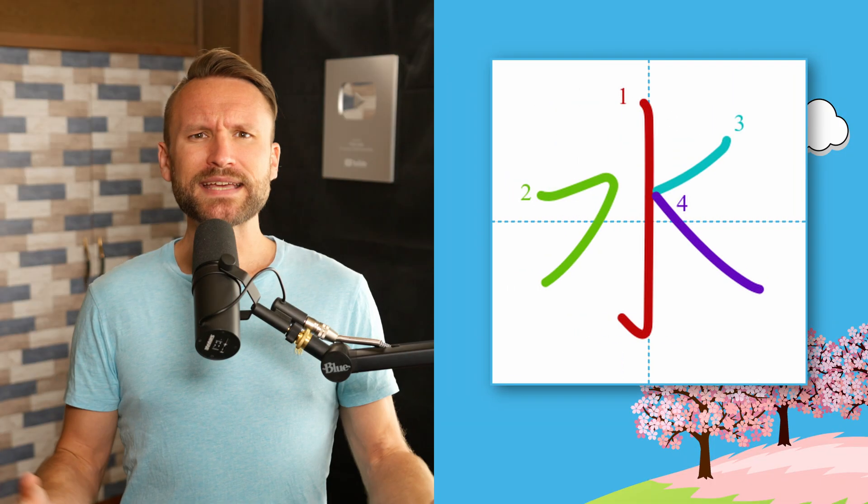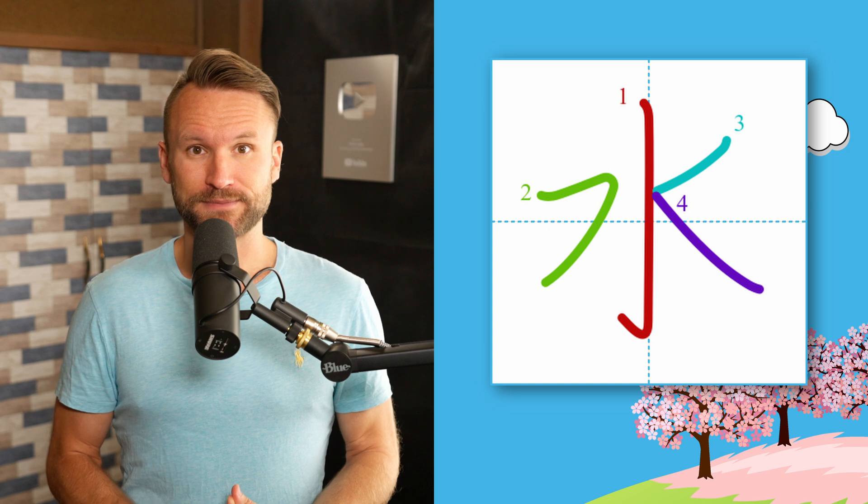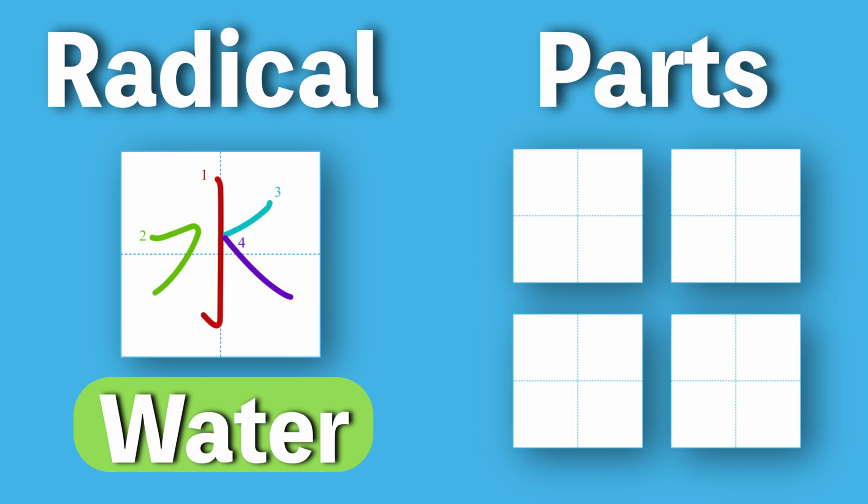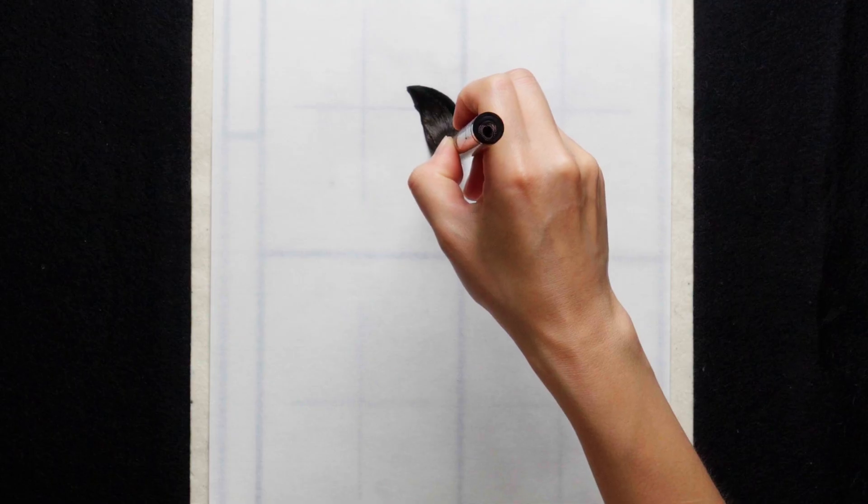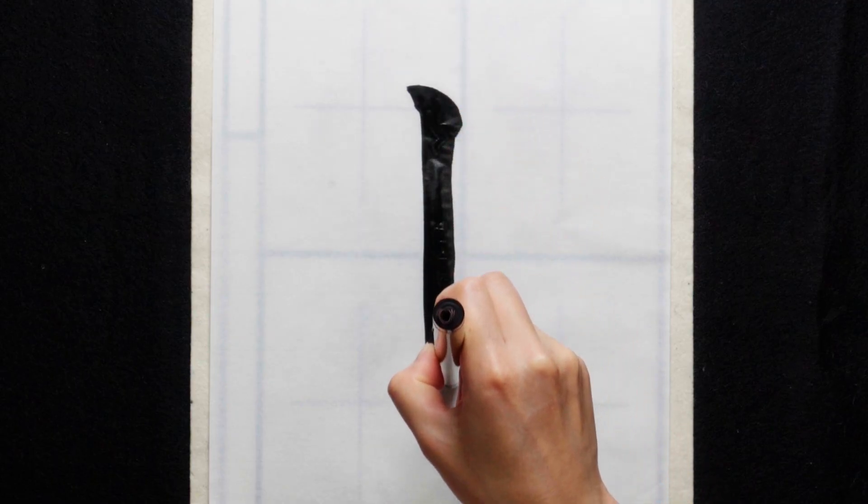Which finally takes us to the kanji that uses these last three parts: water. Water's official radical is water. But we can break it down into feathered broom, fu, a normal no radical, and backwards no.